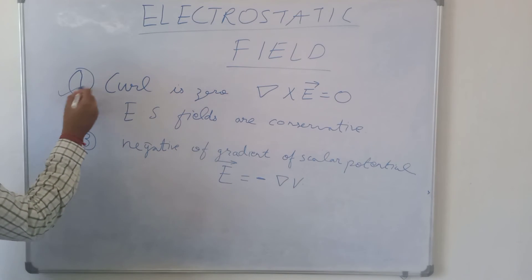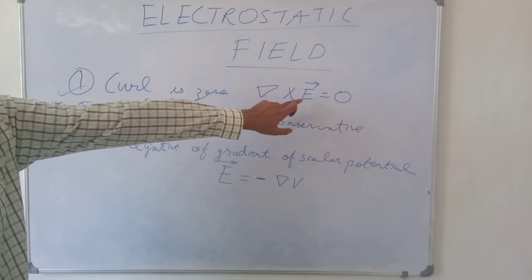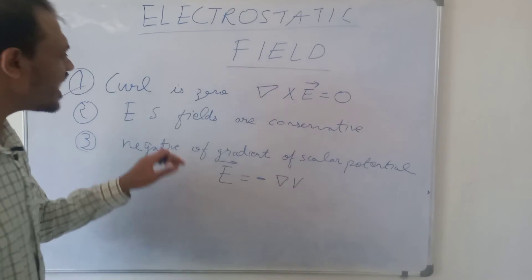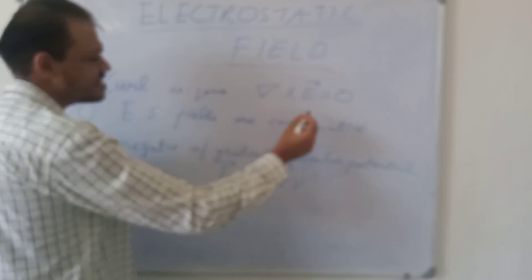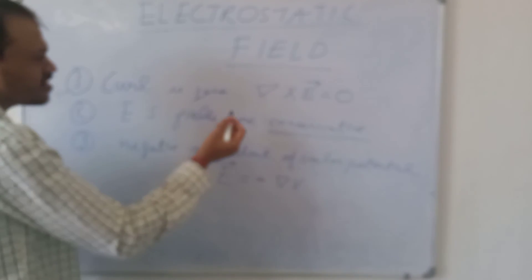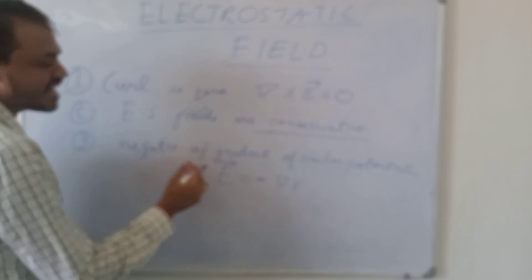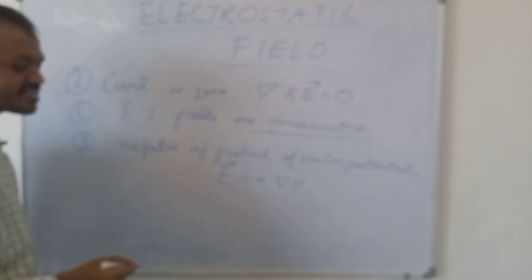So these are very important points. Curl is zero, so ∇ cross E vector is zero. If the curl of any field is zero, it is also conservative. So the curl of electrostatic field is zero, electrostatic fields are conservative, and they are given by the negative of gradient of scalar potential — E vector is minus ∇V.